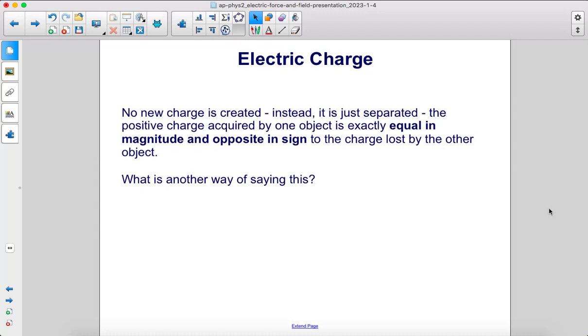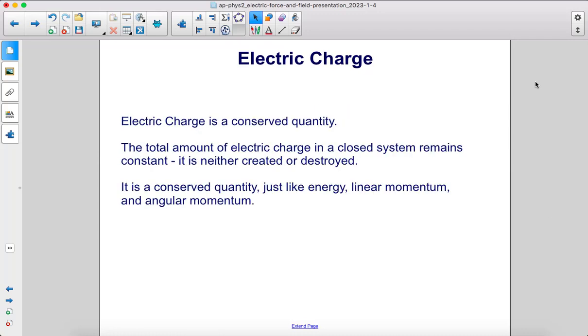What is another way of saying this? Electric charge is a conserved quantity. The total amount of electric charge in a closed system remains constant. It is neither created or destroyed.